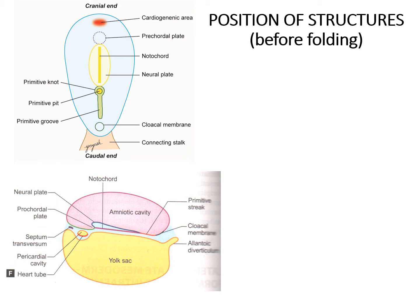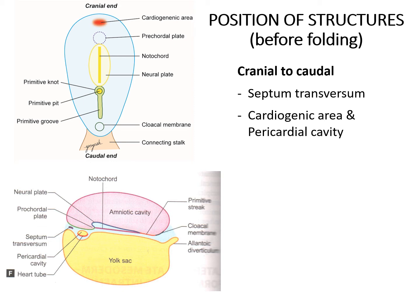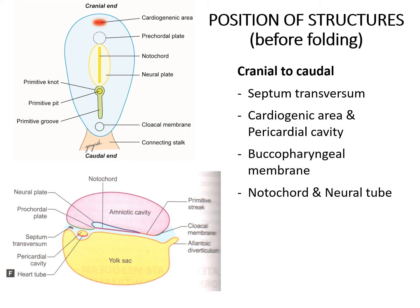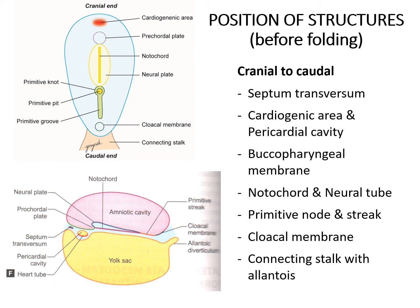Folding also affects the relative positions of various structures. Before folding, from cranial to caudal: the cranial-most structure is the septum transversum, formed by the unsplit part of the intraembryonic mesoderm; just behind it lies the intraembryonic coelom, which will form the pericardial cavity, with the cardiogenic area in its floor; behind it lies the pre-cordal plate, now called the buccopharyngeal membrane; in the midline lies the notochord with the neural tube dorsal to it; caudal to these lie the primitive node and primitive streak; then the cloacal membrane; and caudal-most is the connecting stalk with the allantoic diverticulum.